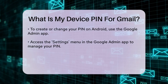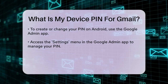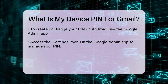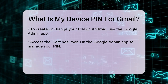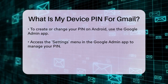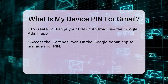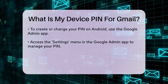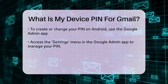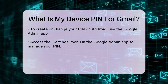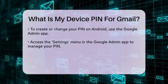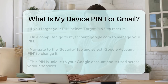On a computer, you can manage your PIN by going to your Google account settings. Open your Google account on the web at myaccount.google.com, sign in, and navigate to the Security tab. Select Signing in to Google, and then Google Account PIN. You may need to sign in again to proceed. From here, you can select the option to change your PIN, enter a new one, and save the changes.